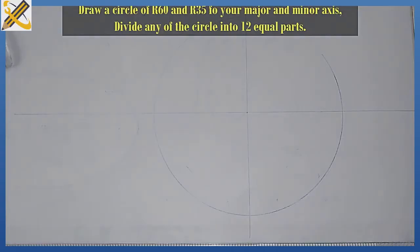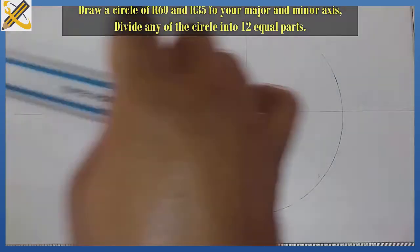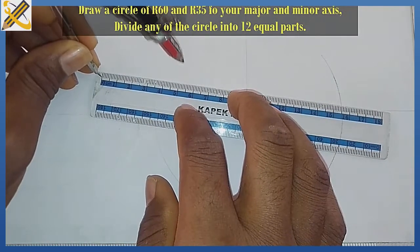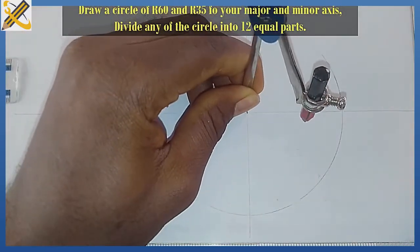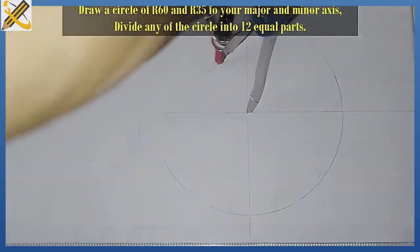Then the minor axis is 70mm, so I'm going to pick radius 35, which is this, and I'm going to draw my minor axis.